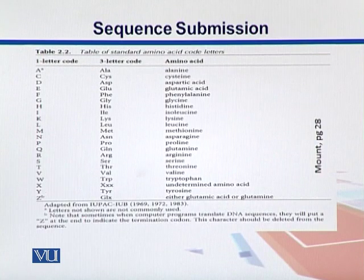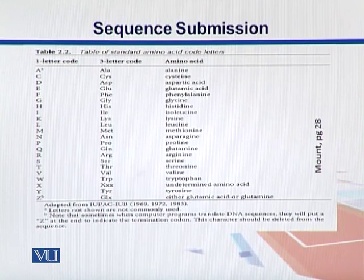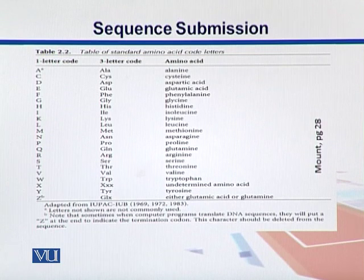For amino acids, we have single-letter codes from A to Z, though some letters are missing. For example, there are four amino acids starting with G, so G was given to glycine. For the rest, other letters are used — for instance, glutamic acid is represented as E, tyrosine as Y, and X can be any amino acid, similar to N in nucleotide sequences.